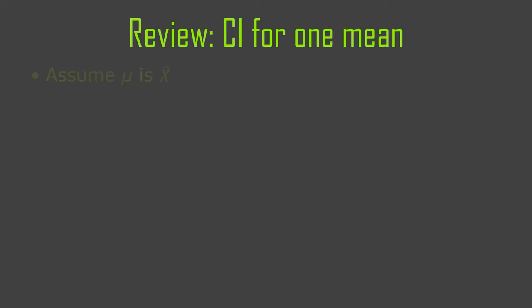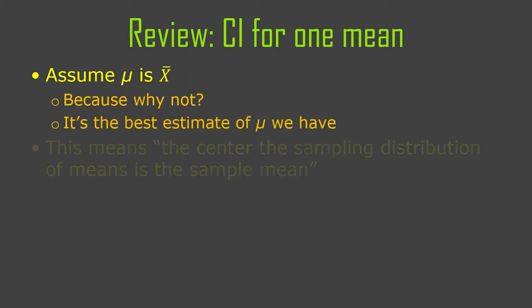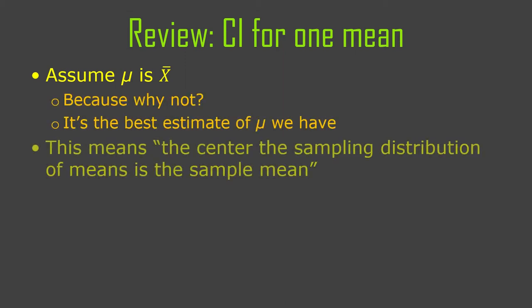Let's review a confidence interval for a single mean. We kind of assume, for the sake of argument, that the mean of the population is the same as our sample mean. Because that's the best estimate of that population mean that we actually have. If we had a better estimate, we'd use that.